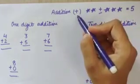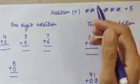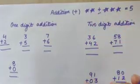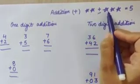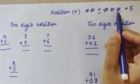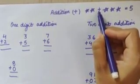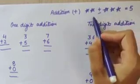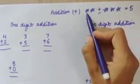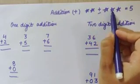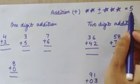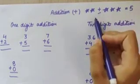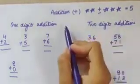Plus means whenever there is a plus sign, we have to count the numbers or objects together. For example, there is 1 star and 2 stars, and there are 1, 2, and 3 stars. Now there is a plus sign in between them, so we have to count all the stars together. Let's count: 1, 2, 3, 4 and 5. That means there are 5 stars, and we will write 5 here. This is addition.